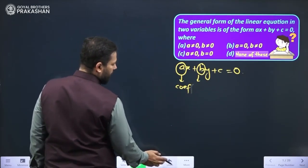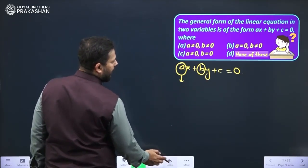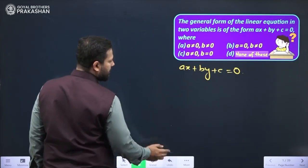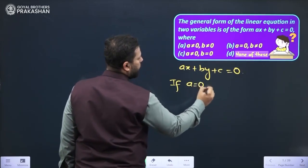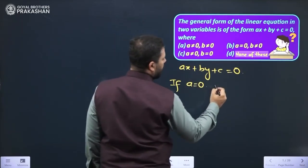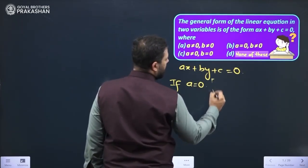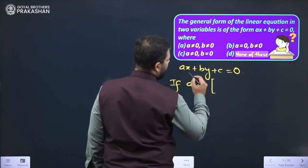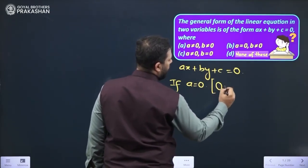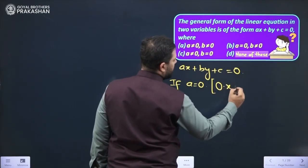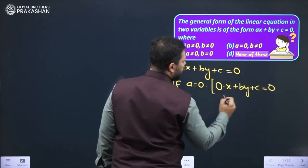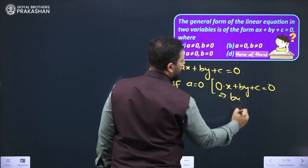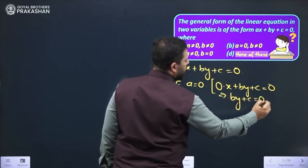Here as we are being given the general form to be ax plus by plus c equals to 0, if let us suppose a is equal to 0, in that case what will happen? In that case you can understand that in place of a if I write 0 it becomes 0 times x plus by plus c equals to 0. That will be simply by plus c equals to 0.